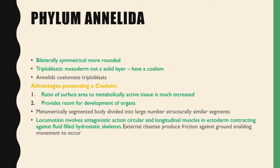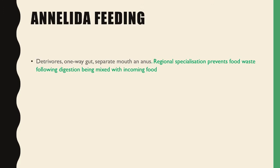The next phylum is Annelida, which are bilaterally symmetrical and more rounded. They are also triploblastic, having a mesoderm, but it is not a solid layer — Annelida possess a coelom. The advantage of possessing this coelom is that the ratio of surface area to metabolically active tissue is much increased, providing room for development of organs. They have a metamerically segmented body divided into a large number of structurally similar segments. Locomotion involves an antagonistic action of circular and longitudinal muscles contracting against the fluid-filled hydrostatic skeleton, with external setae producing friction against the ground enabling movement. In terms of feeding, they are usually detritivores and have a one-way gut with a separate mouth and anus, with regional specialisation preventing food waste mixing with incoming food.